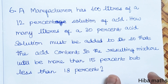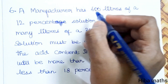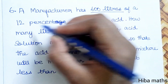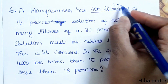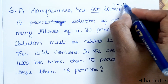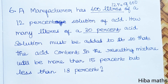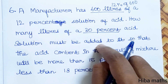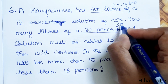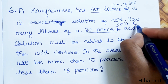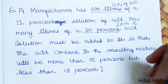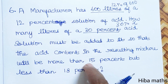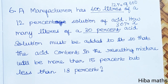To understand the question: the manufacturer has 600 liters of 12% acid — that is 12% of 600. How many liters of a 30% acid solution must be added? That is 30% of x liters, where we don't know how many liters. We need the result to be greater than 15% and less than 18%.